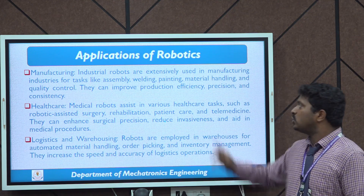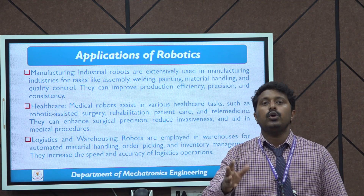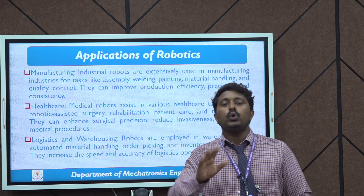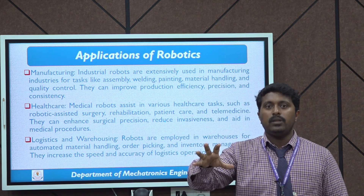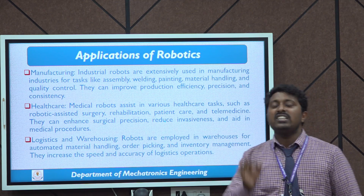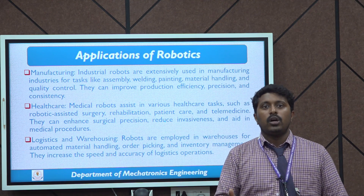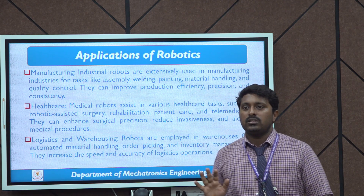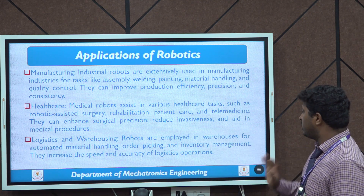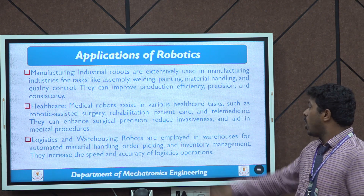Now let's discuss different applications of robots. In manufacturing, all industries are now using robotic assembly lines — car manufacturing industries use robots for parts manufacturing, assembly, inspection, and painting. In healthcare, robots are used to assist doctors and medical workers, support surgery, and care for elders. In logistics and warehousing, robots are used for automated material handling — pick and place, loading, unloading, order picking, and inventory management, increasing speed and accuracy.